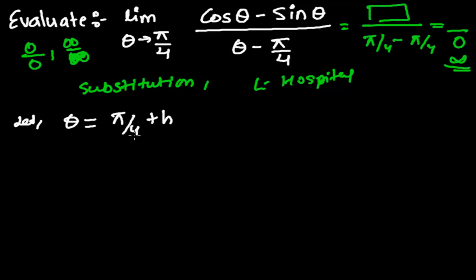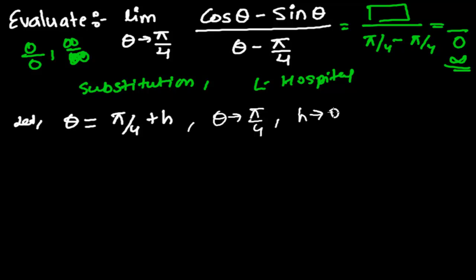We suppose theta equals to pi by 4 plus h. Whenever the limit point is some value, we add h to it — for example, if theta tends to 5 we suppose 5 plus h, or if nine by four, then nine by four plus h. Here h is a very infinitely small value, so when theta tends to pi by 4, h tends to zero.